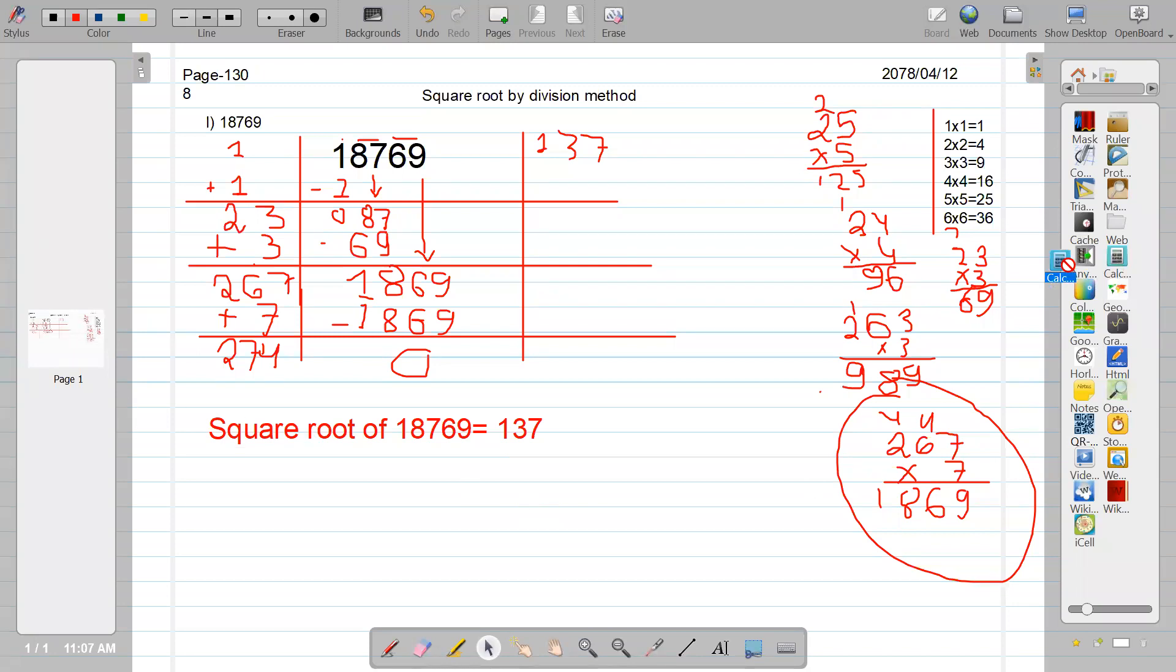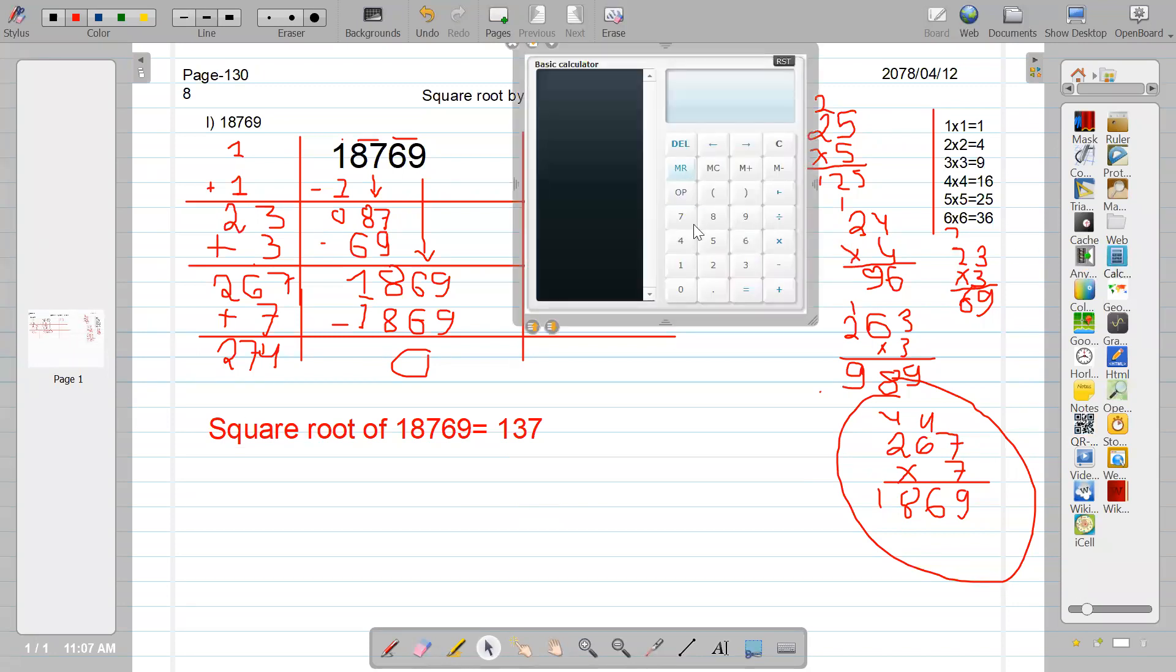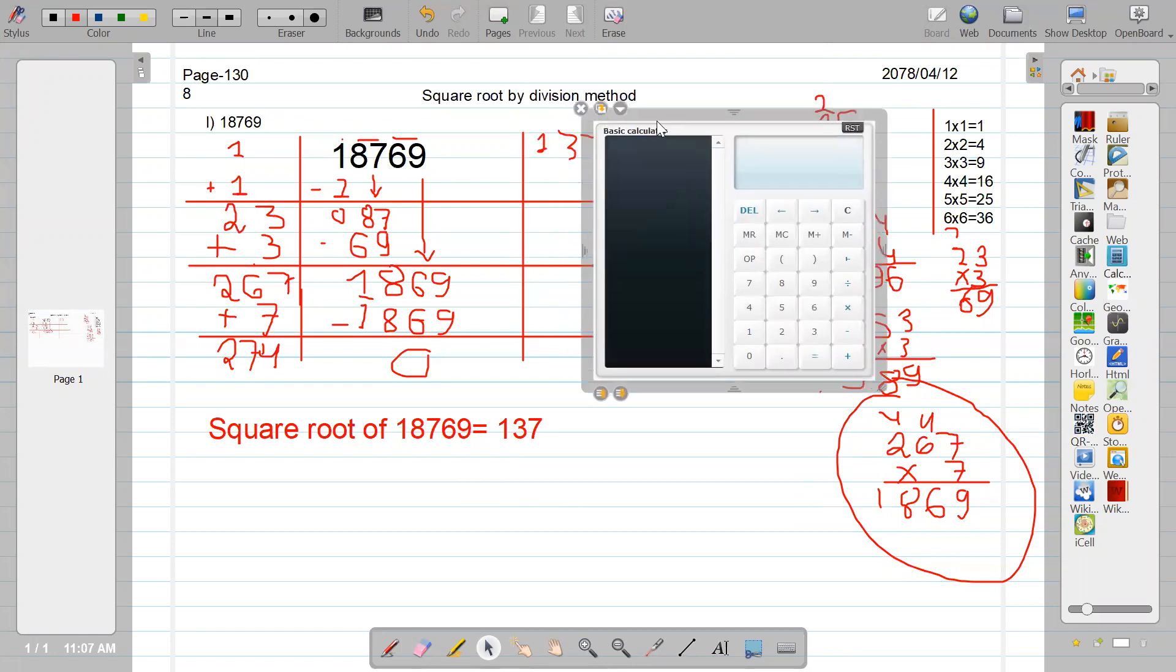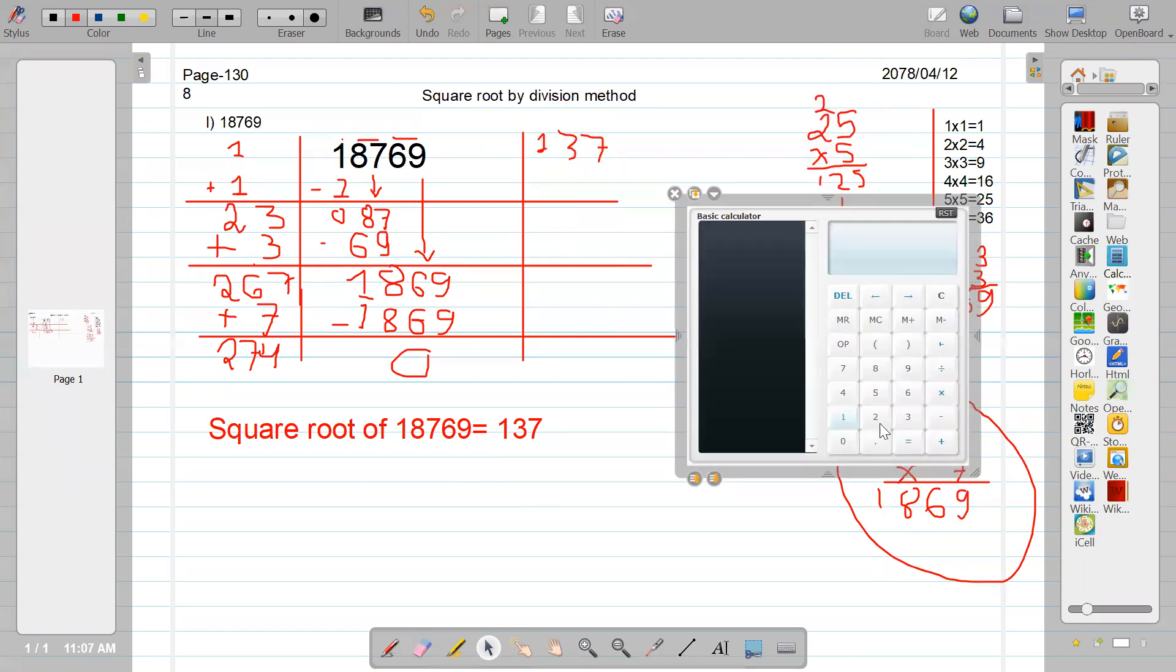Actually, we cannot use calculator in this level, but let's try whether our answer is right or not. 137 into 137 is exactly 18,769, which is our given question. So, it is the correct answer.